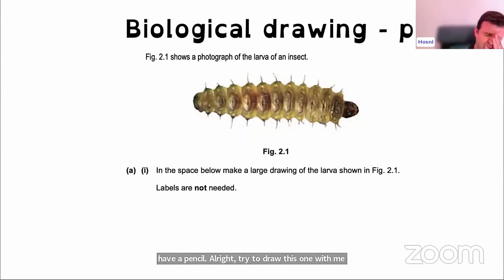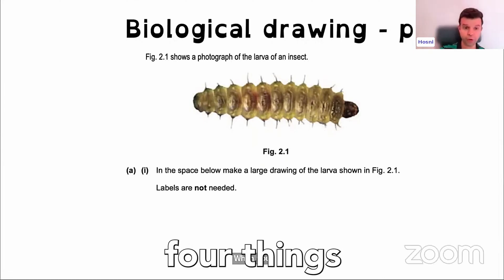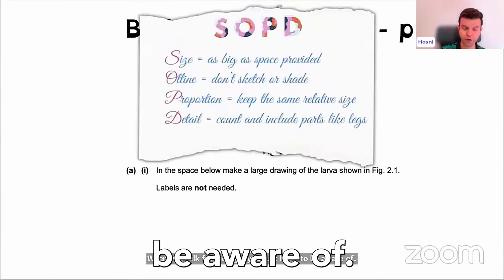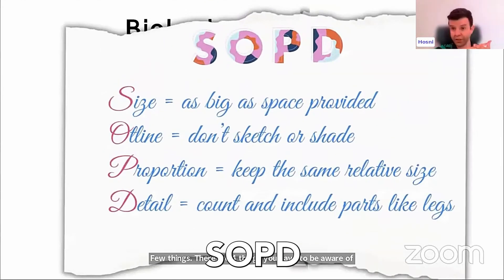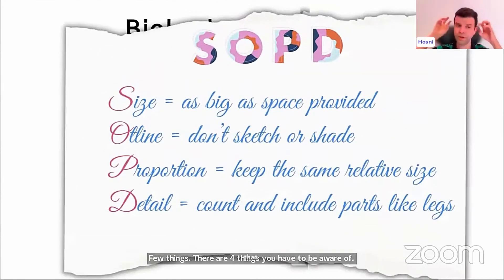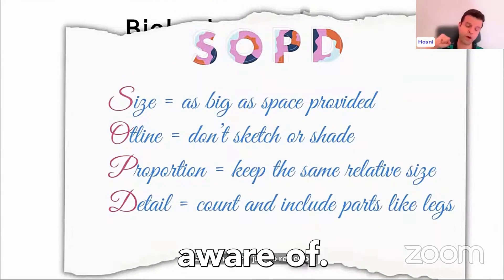When you draw for biology, you just have to be aware of a few things. There are four things you have to be aware of. I call it S-O-P-D, just to remember the things I have to be aware of.